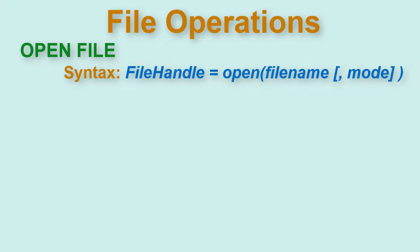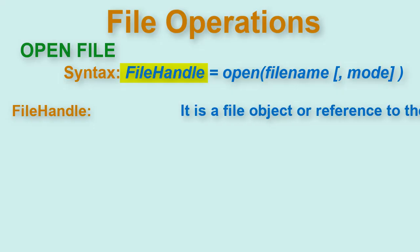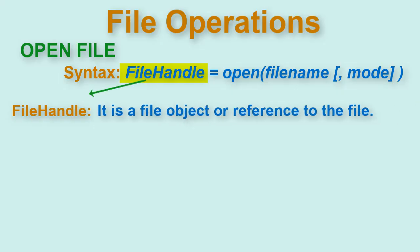In Python, you open the file using the given syntax. When we open a file, it returns to us a file handle. What is this file handle? When we call the open command, it returns to us a file object or reference to the file which is used to carry out any subsequent operation on the file like read or write.